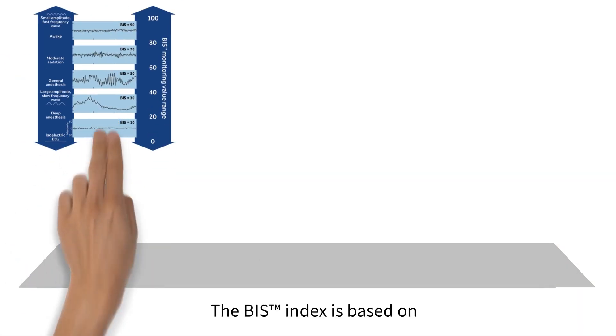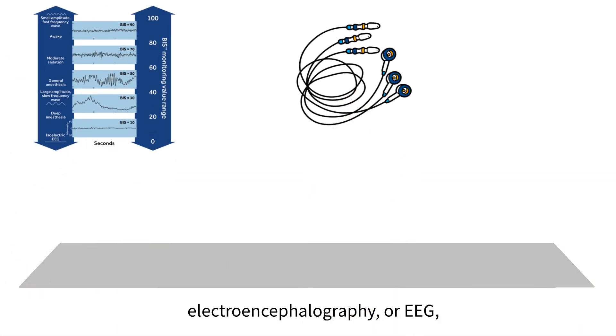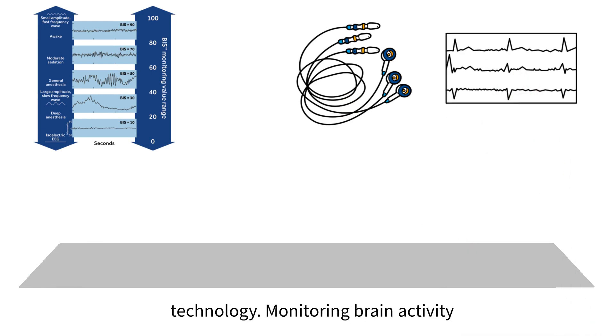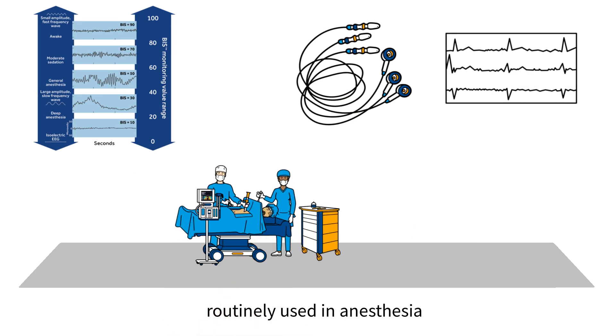The BIS index is based on electroencephalography or EEG technology. Monitoring brain activity with EEG is unique among monitoring equipment as none of the other monitors routinely used in anesthesia measure brain activity directly.